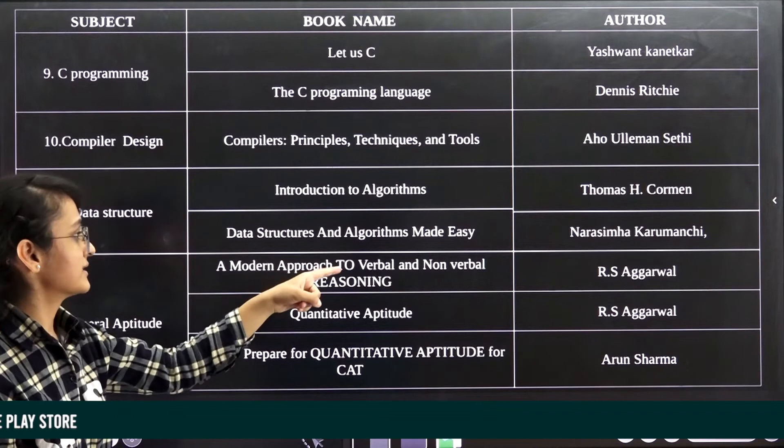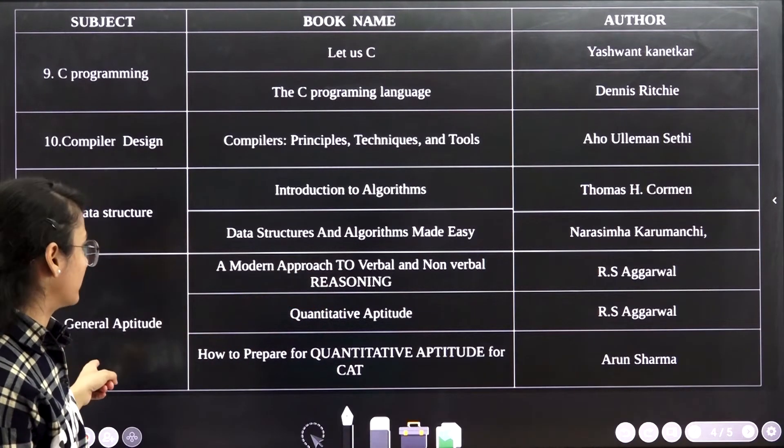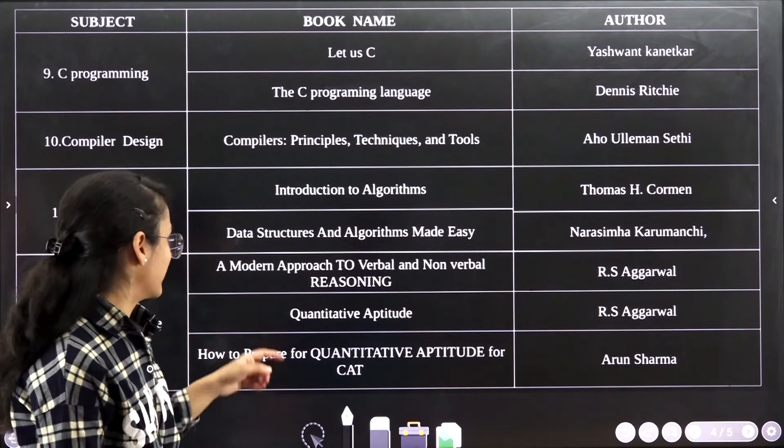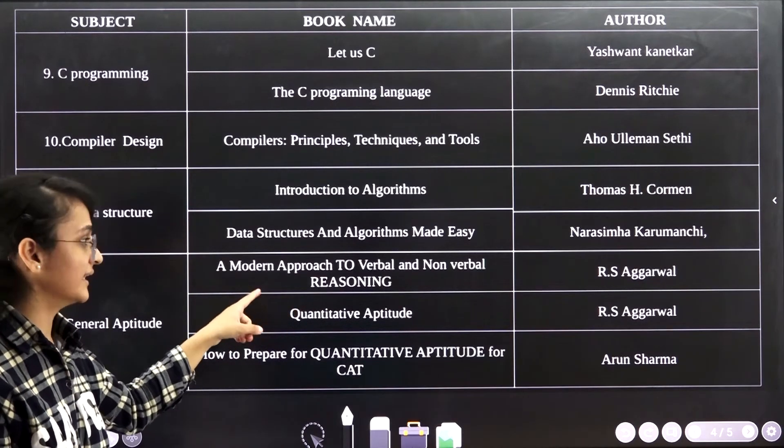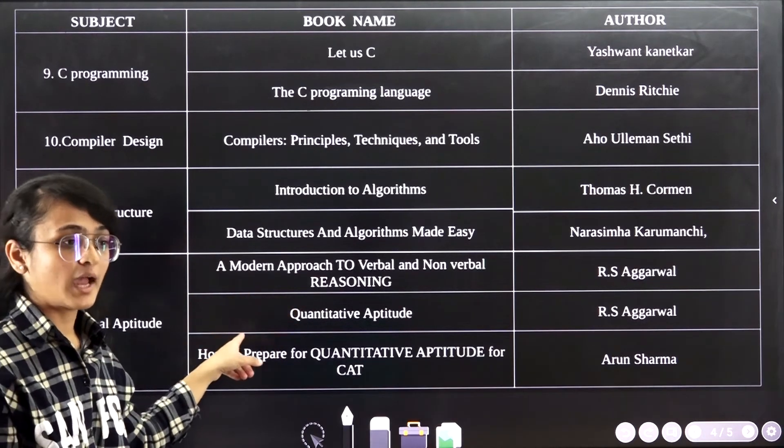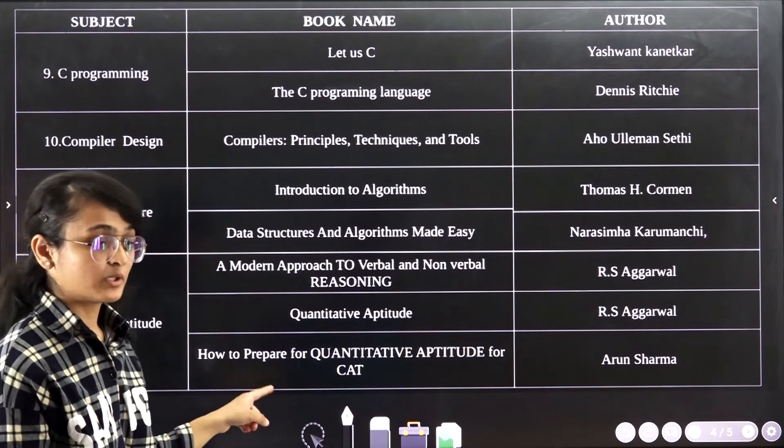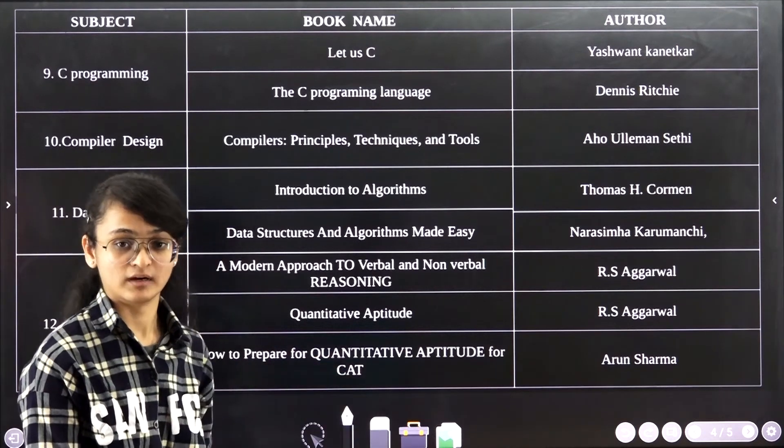Then the final one is General Aptitude. For General Aptitude, for verbal and non-verbal reasoning, basically the best book is Modern Approach to Verbal and Non-Verbal Reasoning by R.S. Aggarwal, and Quantitative Aptitude also by R.S. Aggarwal. And the next one for Quantitative Aptitude is How to Prepare for Quantitative Aptitude for CAT by Arun Sharma.